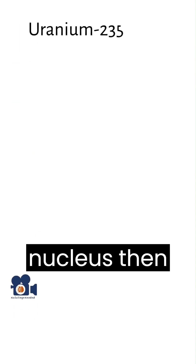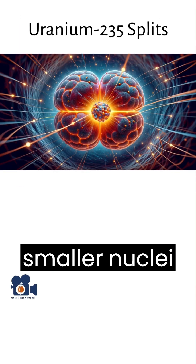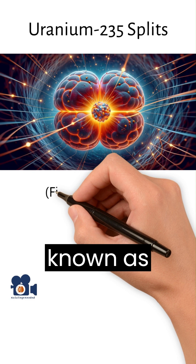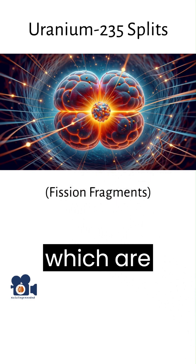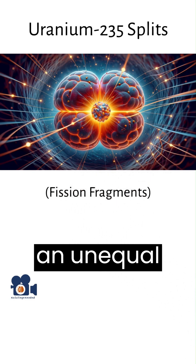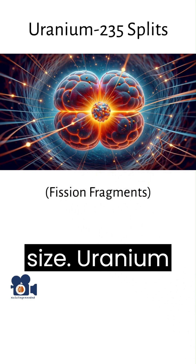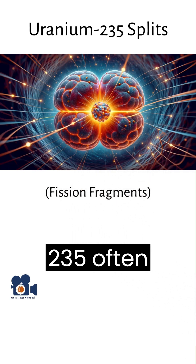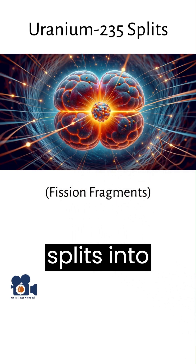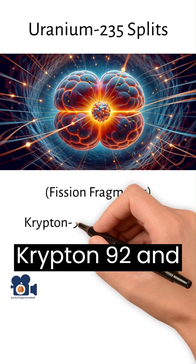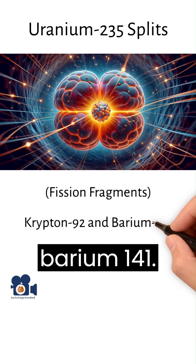This unstable nucleus then splits into two or more smaller nuclei, known as fission fragments, which are typically of unequal size. Uranium-235 often splits into krypton-92 and barium-141.